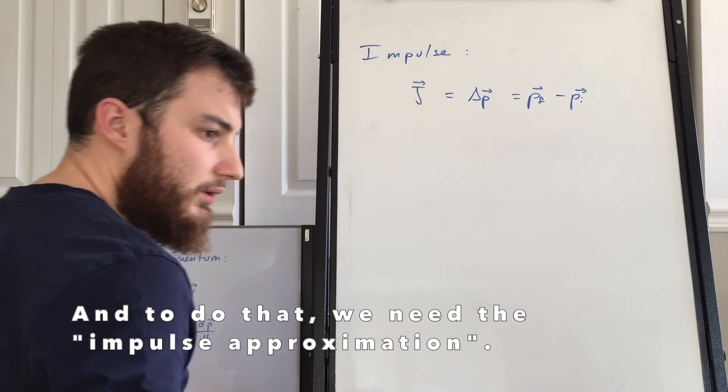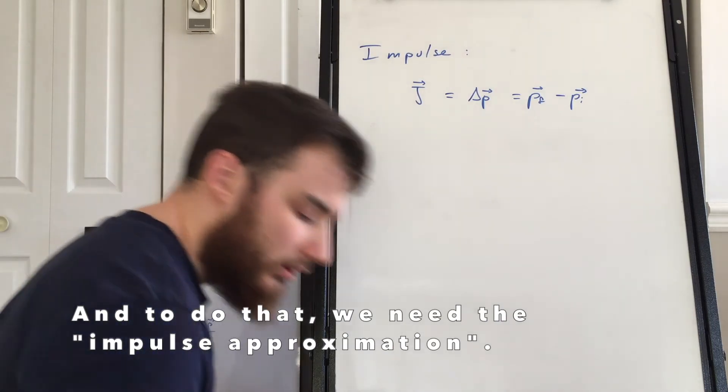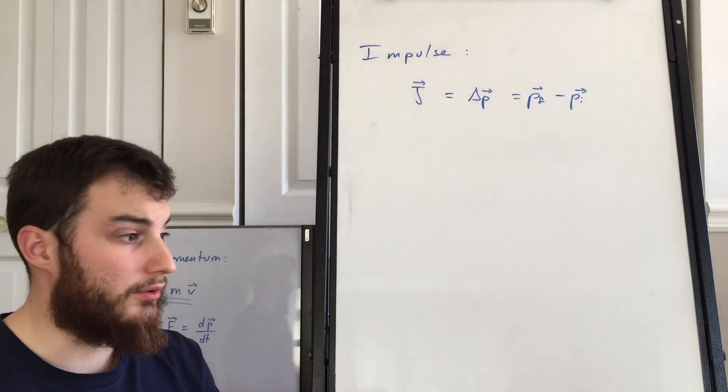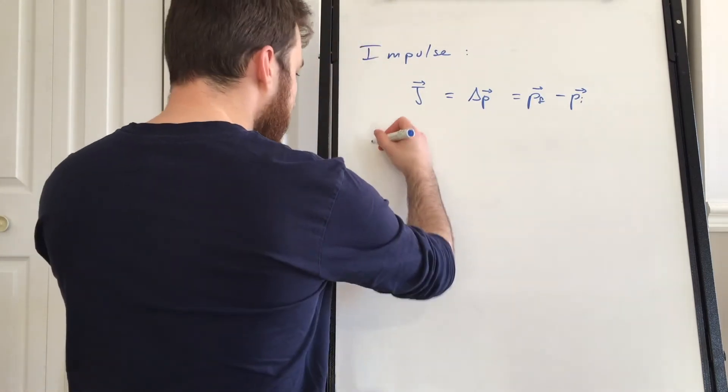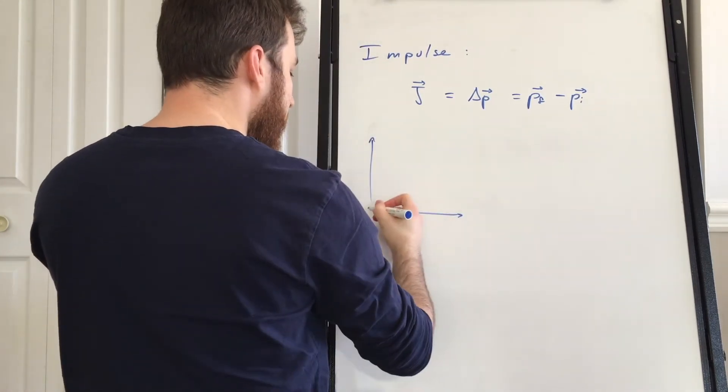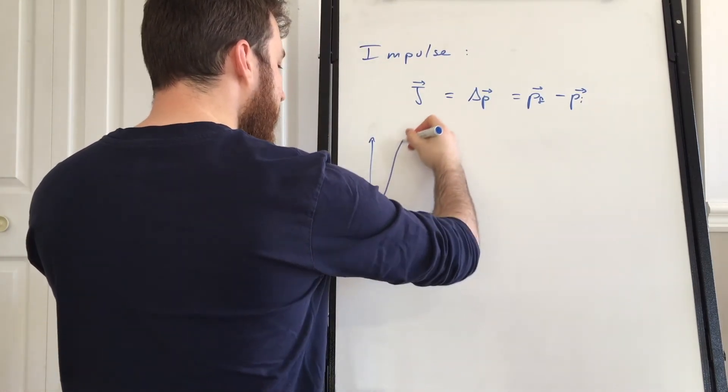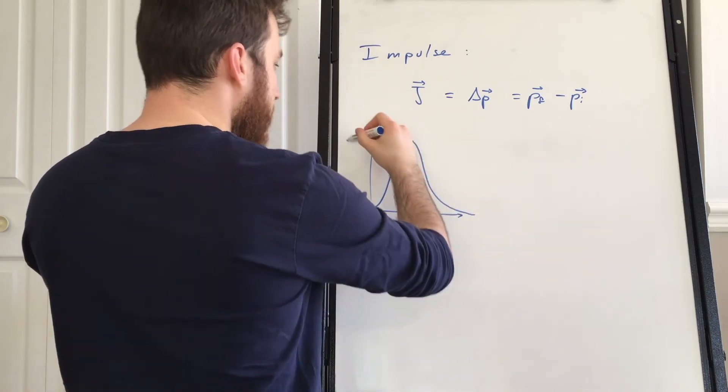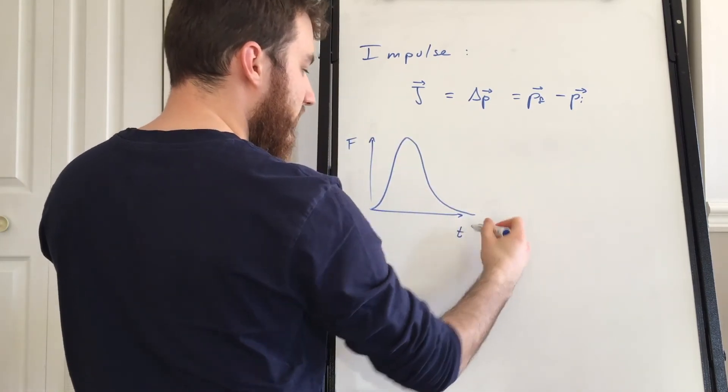we can also find what the average force, for example, I imparted on the marker. When a force is applied on an object during a collision, it usually is a very sharp thing and then it gradually goes down. That's the force with respect to time.